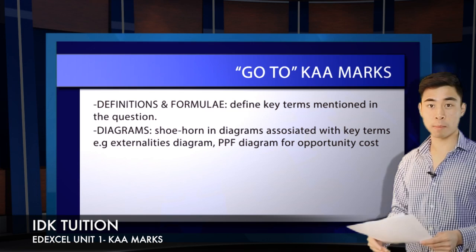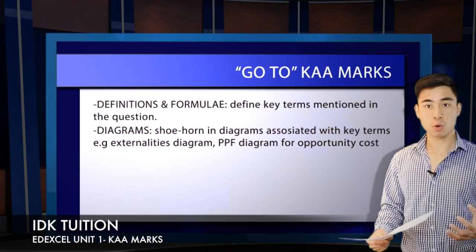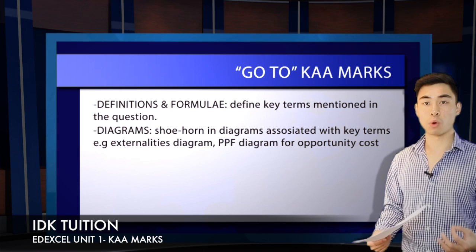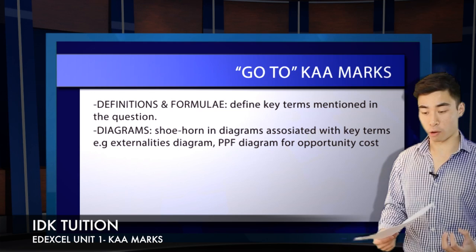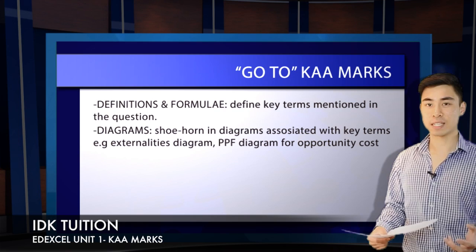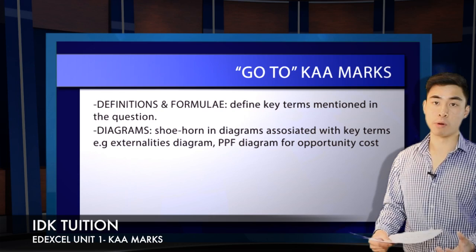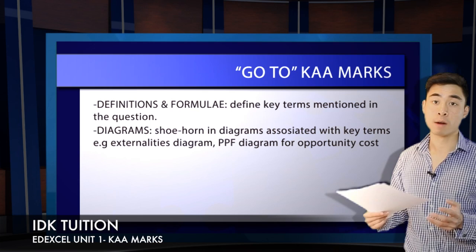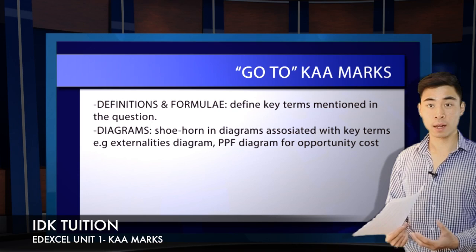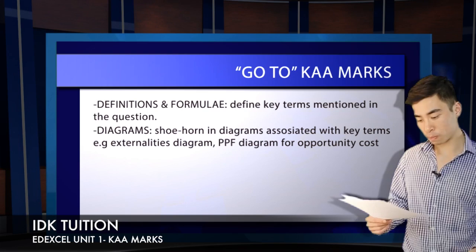The second strand is diagrams. External costs and external benefits would be a good example. It doesn't necessarily need to be an analytical question assessing quantity or price changes. If related to the question you know there's a diagram you can draw, then draw it. For opportunity costs, you can draw your production possibility frontier. You want to be shoehorning in diagrams into as many of these KAA-style questions as possible.